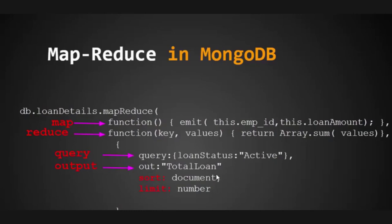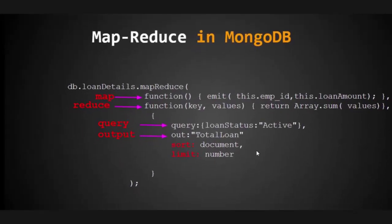To summarize: map is a JavaScript function that maps a value with a key and emits a key-value pair. Reduce is also a JavaScript function that reduces the group of all documents having the same key and sums their values. Out is the output location — a collection for the results. Query specifies optional selection criteria, sort specifies optional sort criteria, and limit specifies the optional maximum number of documents to return.